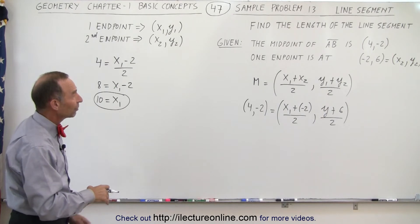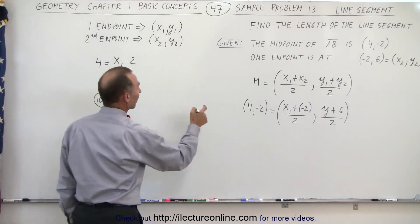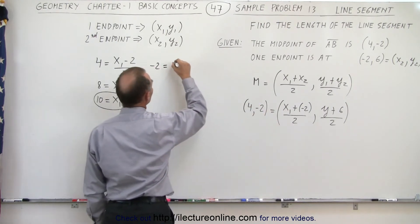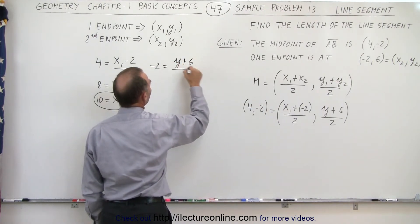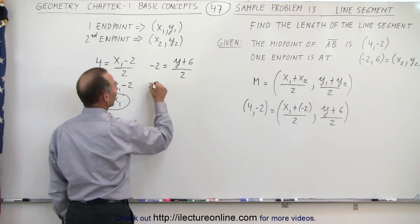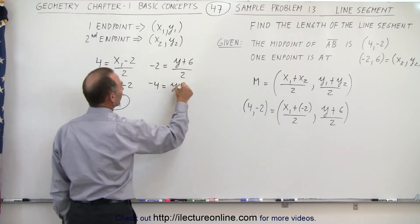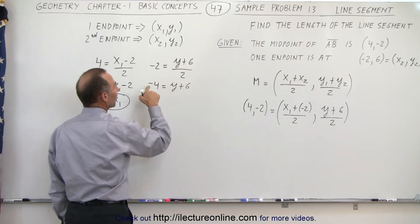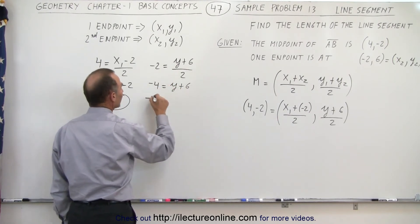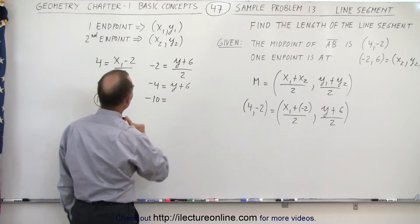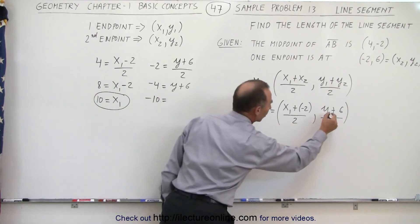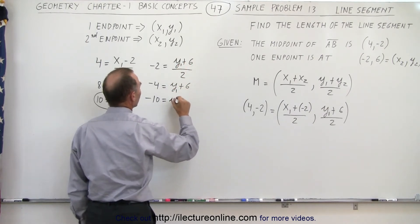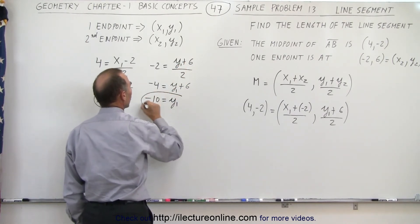Now we do the same for the y-component. We can say that -2 equals (y1 + 6) divided by 2. Multiplying both sides by 2, we get -4 equals y1 plus 6. Moving the 6 to the other side gives -4 - 6, so minus 10 equals y1.